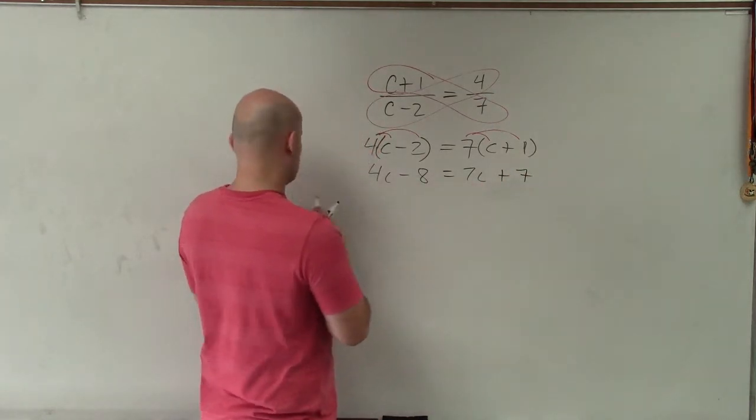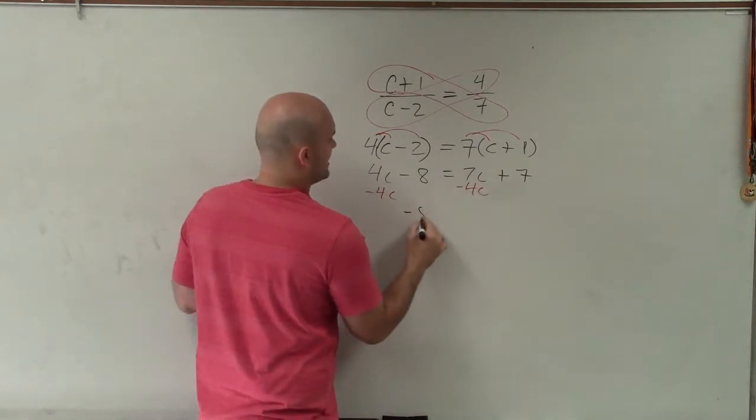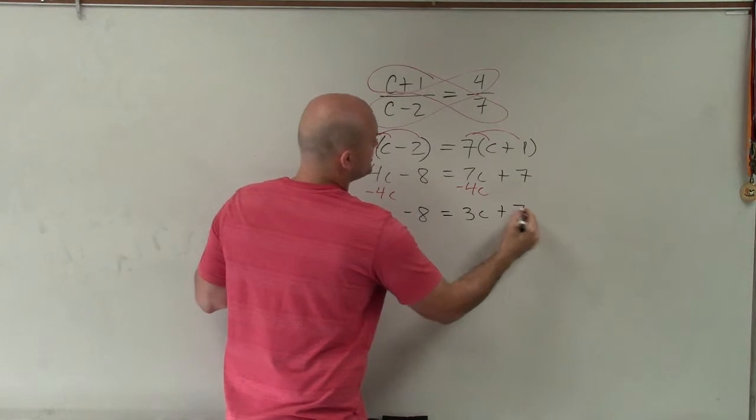Now, you can see I have a variable on both sides. So I want to get the variables to one side. So I'll subtract the 4c on both sides. And I get negative 8 is equal to 3c plus 7.